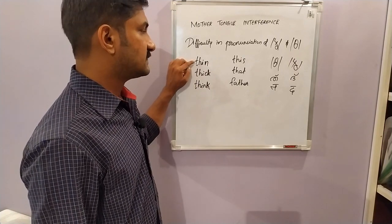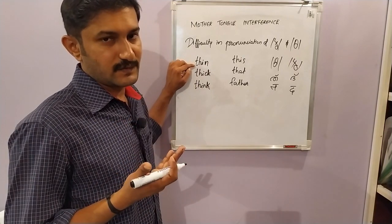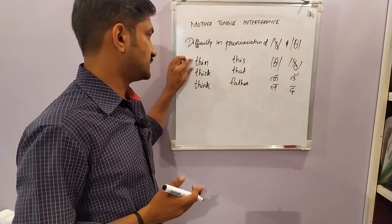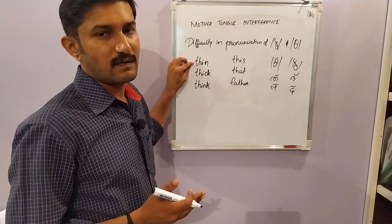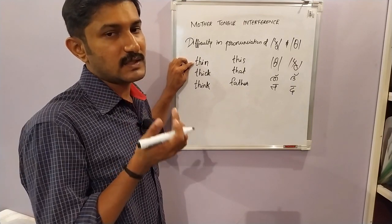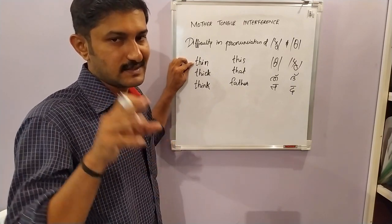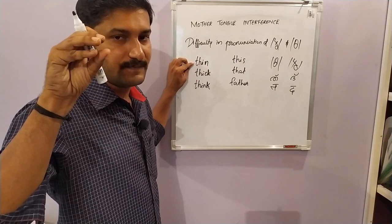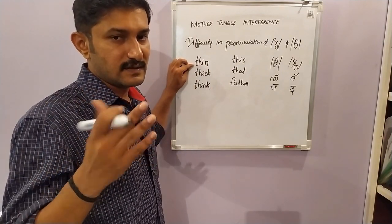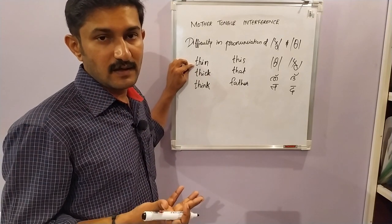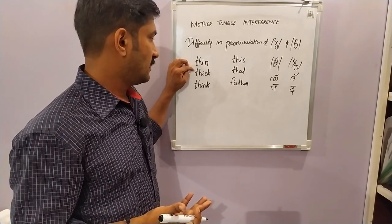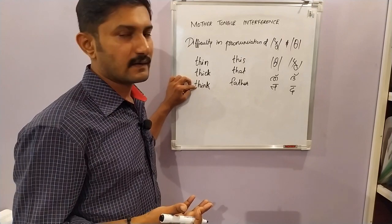If the tongue is making an obstruction, the sound would be categorized as a plosive. But this is a fricative — so it is 'thin', 'thick', 'thin'. Coming to the voiced 'th' — sounds like 'this', 'that', 'father'. Indian learners mispronounce this as 'dis', 'dat', 'fader'. It is not that — it is 'this', 'that', 'father'.